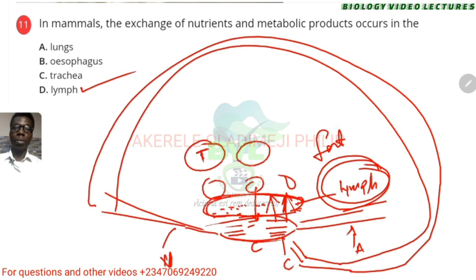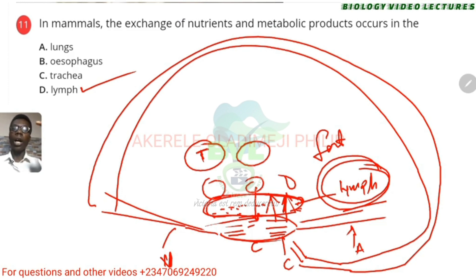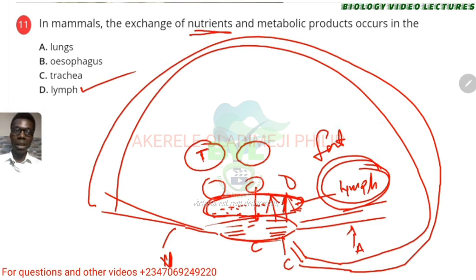The lymphatic vessel will take this leaked fluid back to the blood. The lymphatic system helps to transport the waste which leaks there, and the fat and some other things. Fat is one of the products transported. From analysis, A to C cannot be the ones carrying nutrients and metabolic products, so the answer is D.